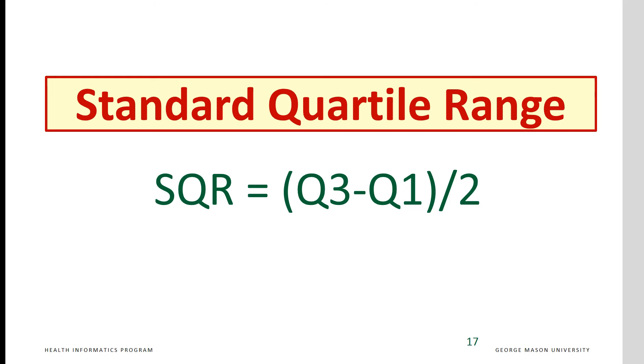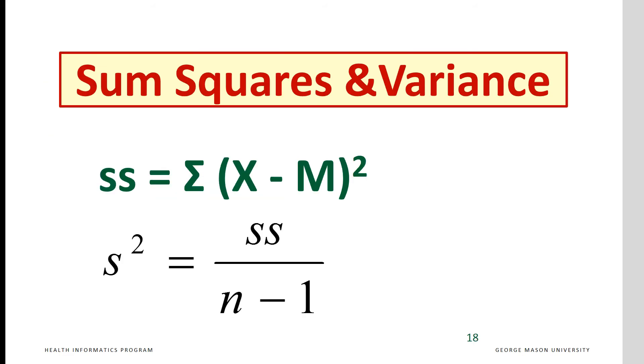The semi-quartile range is half of the difference between the 25 percent quartile and 75 percent quartile. It is more stable than range. Sample variance is the sum of the square differences between observations and their mean, divided by n minus 1, number of observations minus 1.